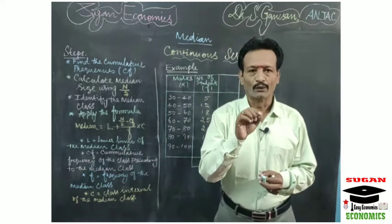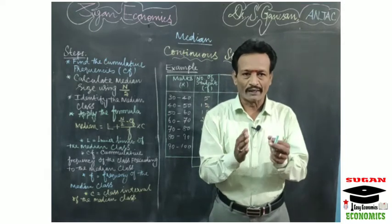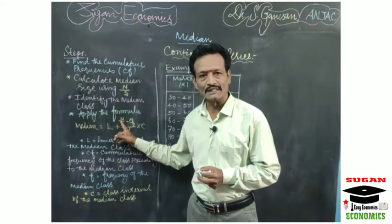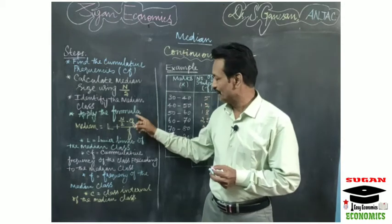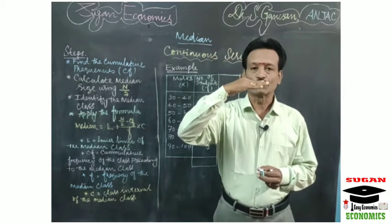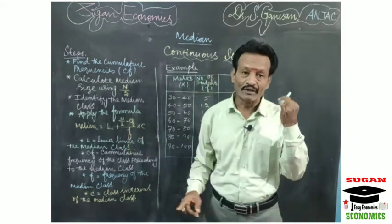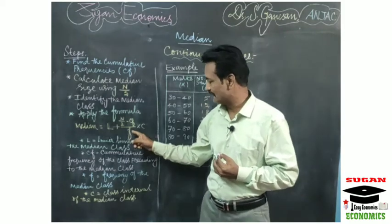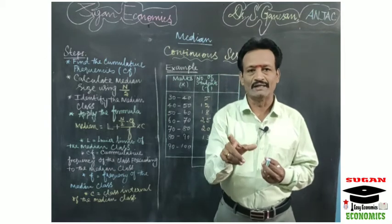Here, L is nothing but the lower limit of the median class. After identifying the median class, you find out the lower limit of the median class — that is the L value. Cf is the cumulative frequency preceding to the median class, that is, the cumulative frequency above the median class. F is nothing but the frequency of the median class — the value in the frequency column for the median class. C is the class interval or class limit of the median class.